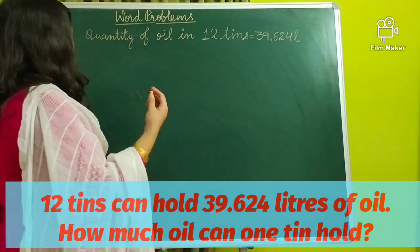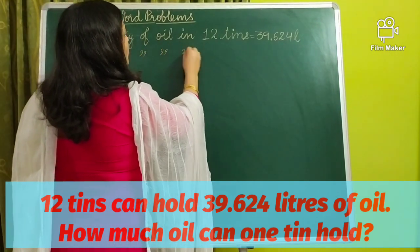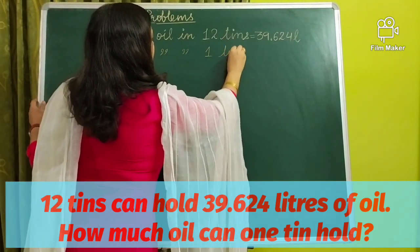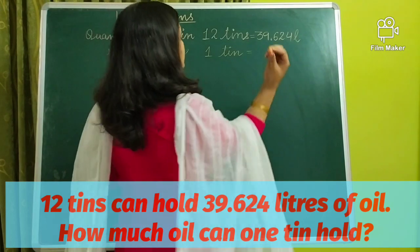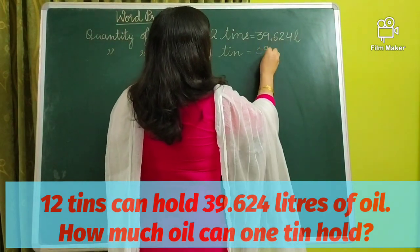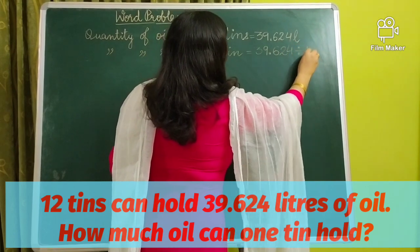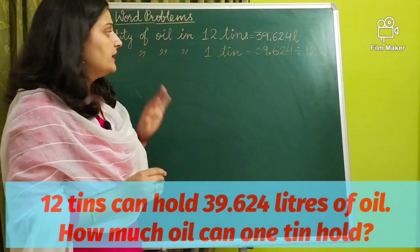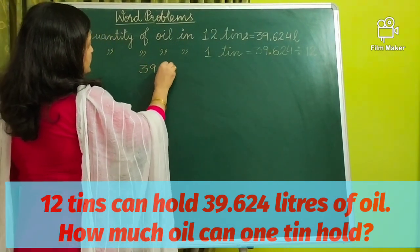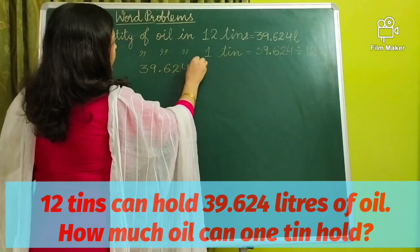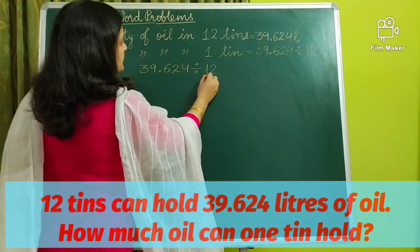So let us solve this question. Quantity of oil in 12 tins is equal to 39.624 liters. We have to find out the quantity of oil in one tin. Since one tin means the quantity will be less, for this 39.624 is divisible by 12.